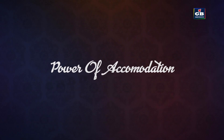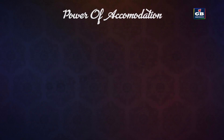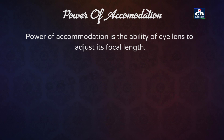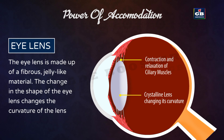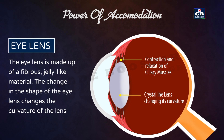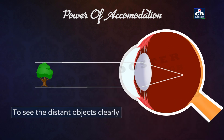The power of accommodation is the ability of the lens to adjust its focal length. The lens is made up of a fibrous jelly-like material. The change in the shape of the lens changes the curvature of the lens. The contractions and relaxation of ciliary muscles can modify the shape of the lens.